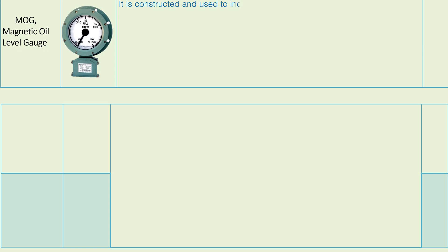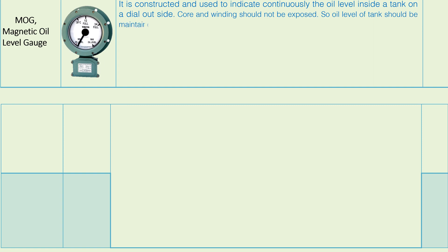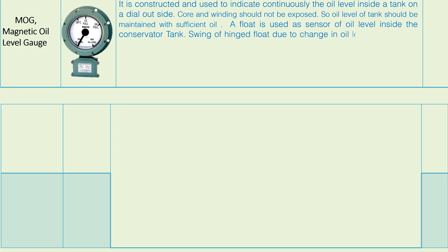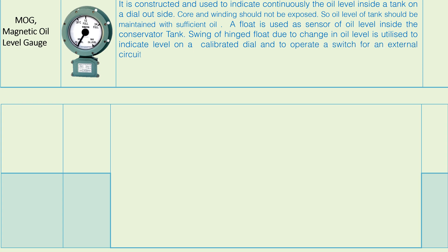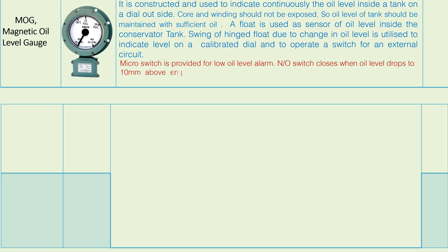MOG — Magnetic Oil Level Gauge: It is constructed and used to continuously indicate the oil level inside the tank on a dial outside. Cover and windings should not be exposed, so the oil level of the tank should be maintained with sufficient oil. A float is used as a sensor of oil level inside the conservator tank. The swing of the hinged float due to change in oil level is utilized to indicate level on a calibrated dial and to operate a switch for an external circuit. A micro switch is provided for low oil level alarm; the switch closes when oil level drops to 10 mm above empty, that is 75 mm from the bottom of the conservator. The indicator can be mounted in a tilted position toward ground, maximum 30 degrees, for easy viewing.